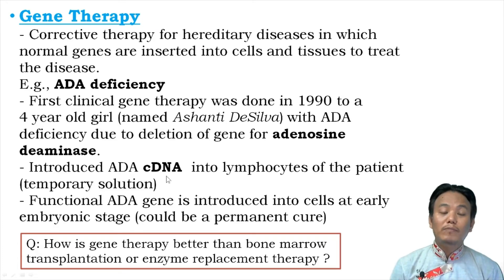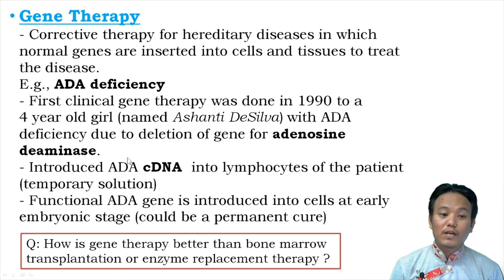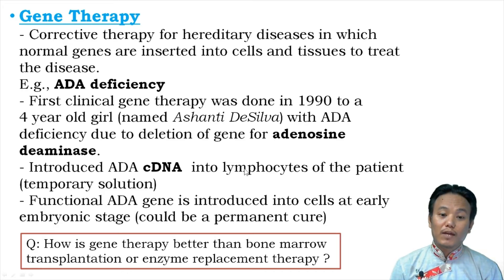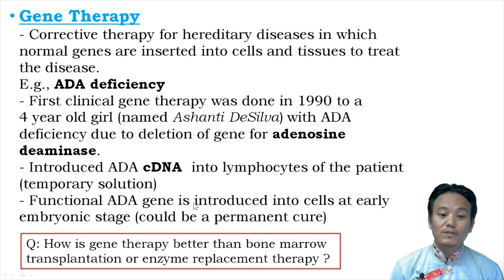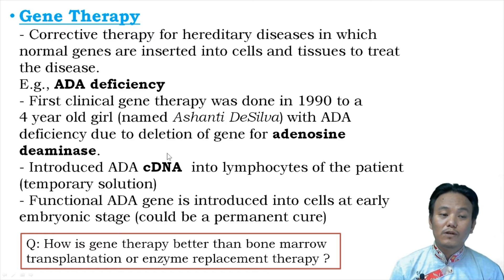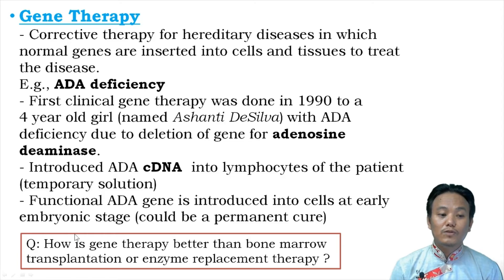The cDNA — complementary DNA — is produced by reverse transcription from the mRNA coding for adenosine deaminase. This cDNA is introduced into the patient's lymphocytes cultured in vitro, and those lymphocytes are injected back into the patient for temporary treatment. To make the treatment permanent, the disease must be diagnosed at early embryonic stage so that functional ADA DNA can be introduced into embryonic cells, potentially freeing that person and their children from ADA deficiency.